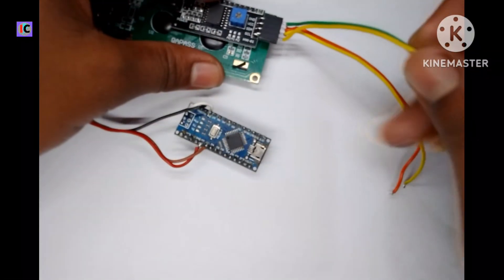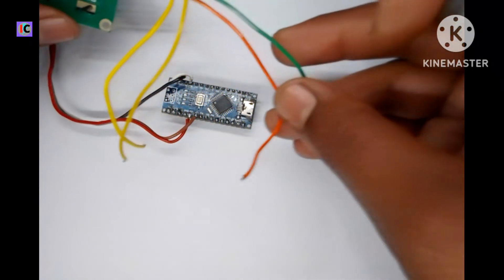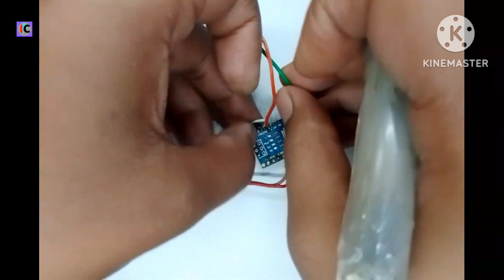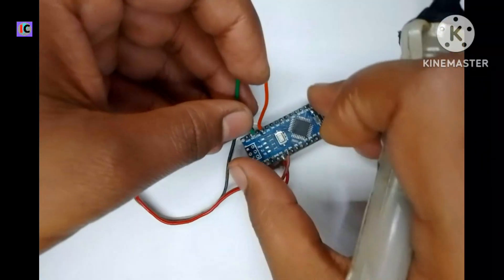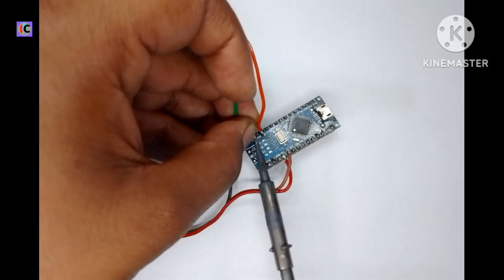Now you can see the sensor is connected and I am going to connect the I2C display with this Arduino. Connect the 5 volt and ground respectively. Now the VCC and ground is connected.